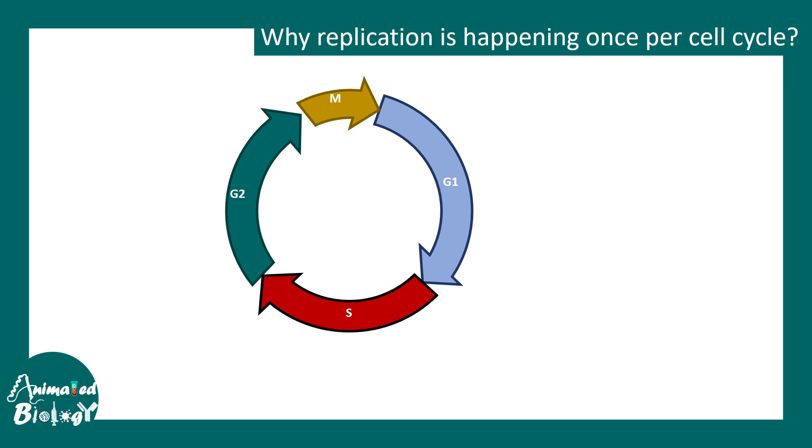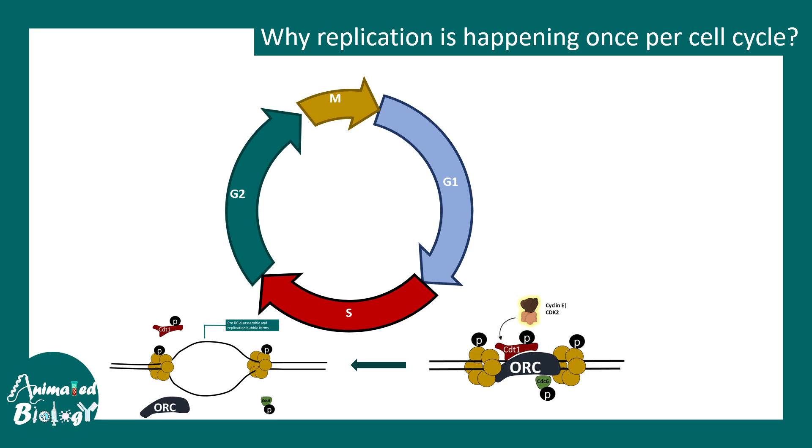So let's try to understand why replication is happening only once per cycle. We understood the licensing event. It is happening in the S phase. And due to the licensing event, the replication bubble is starting to form. But why does licensing doesn't happen in any other stage of the cell cycle? The answer is very simple. The CDC6 and CDT1, once phosphorylated, would be dislodged from the complex. Now they cannot reassemble if they are in a phosphorylated state. So phosphorylated CDC6 and CDT1 cannot reassemble. That is why even if they are present, they cannot form an activated pre-RC.